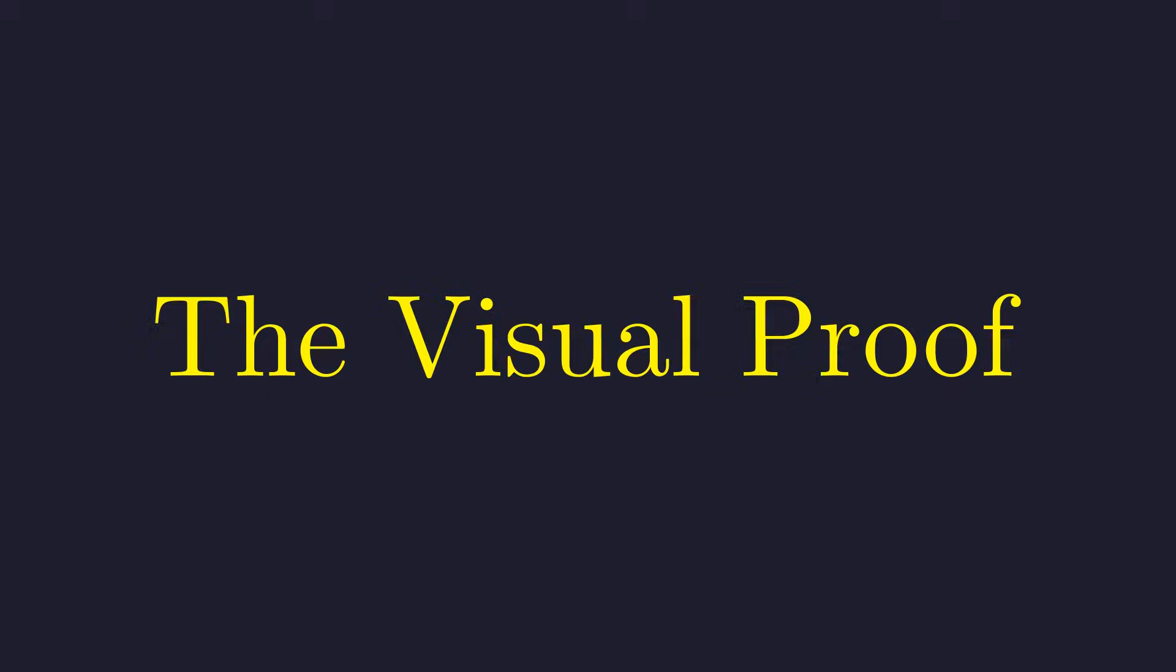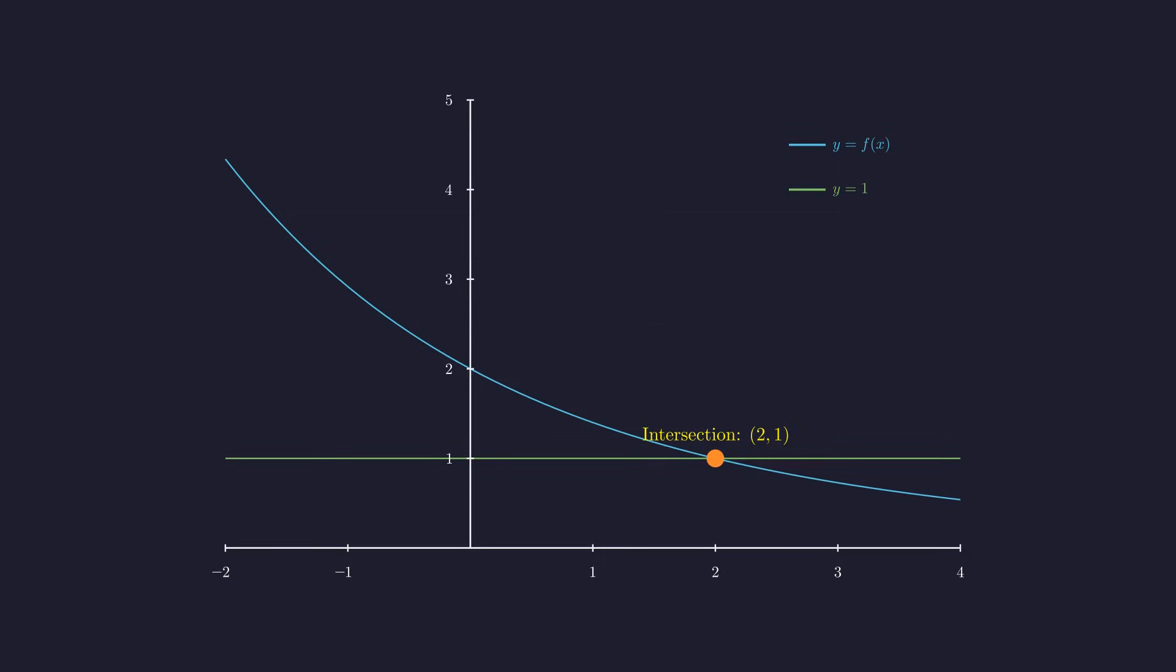Let's visualize this. We will set up a coordinate plane. Here's the plot of our function f of x in blue, and the horizontal line y equals 1 in green. Just as we predicted, the decreasing blue curve crosses the green line at exactly one point. This single intersection occurs at the point 2, 1, which corresponds to our solution x equals 2.